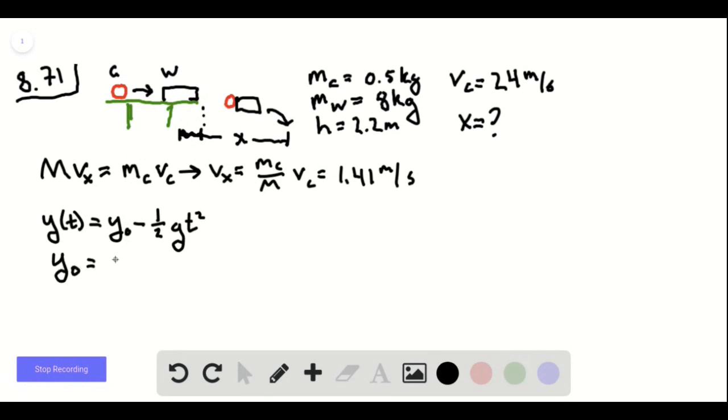So y-naught is equal to 2.2 meters. y of t star, let's call it, just to differentiate it from the variable time, is equal to zero. So when this is equal to zero, we'll be at t star. So we have y-naught equals one-half g t star squared.